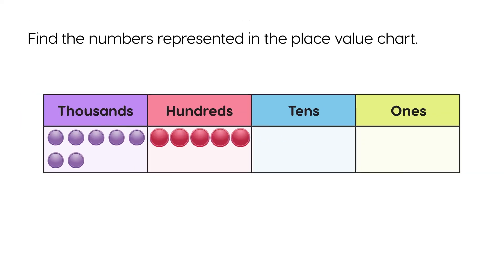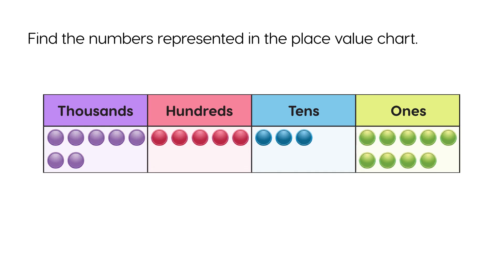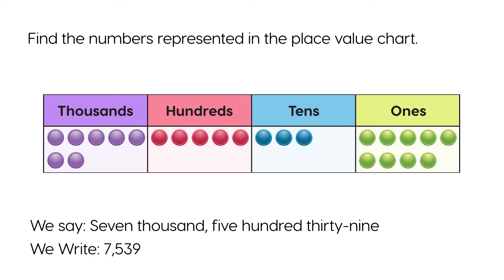Find the number represented in the place value chart. Seven thousands, five hundreds, three tens, and nine ones. We say seven thousand five hundred thirty-nine. We write seven thousand five hundred thirty-nine.